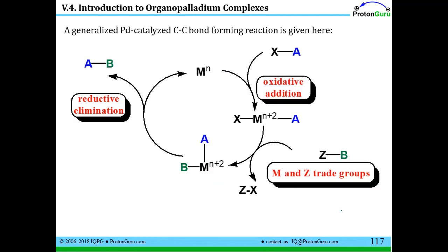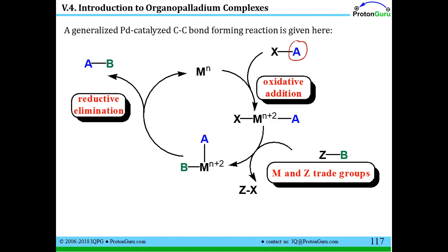So how can we use the fact that palladium can undergo oxidative addition and then release compounds by a reductive elimination process in a catalytic way? Here's a generalized scheme one could envision. You start with a metal — let's say palladium in the zero oxidation state. If we have X-A, where A is some organic piece, we can do oxidative addition: the X and the A both go on the metal, and the metal is oxidized to M(n+1), like palladium(2). We've also seen that metals can do ligand exchange and transmetallation, which allows you to exchange some of the ligands on the metal.